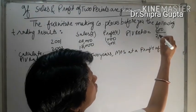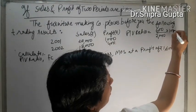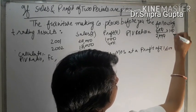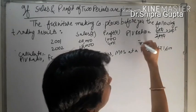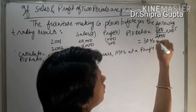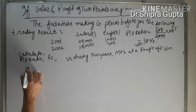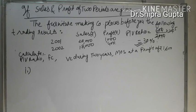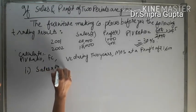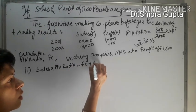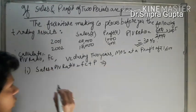Second is fixed cost. PV ratio is given. We apply the PV ratio equation: Sales into PV ratio equals fixed cost plus profit. Put the values in.